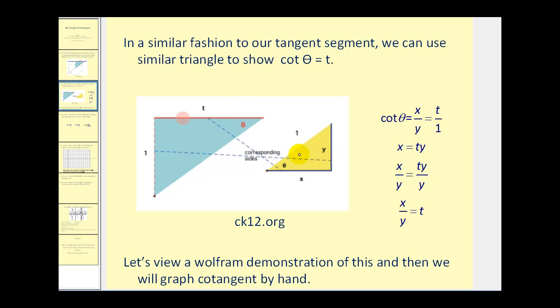Because these two triangles are similar due to angle-angle similarity, we can set up a proportion using the corresponding sides, such that x over y is equal to t over 1.